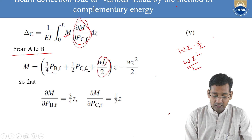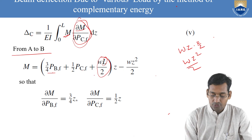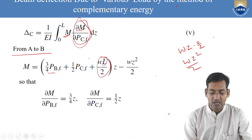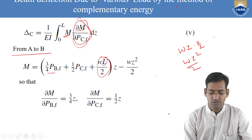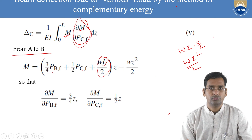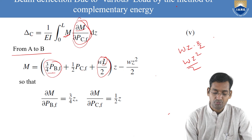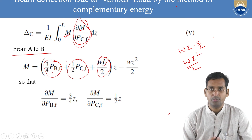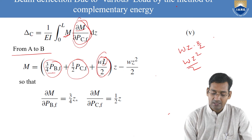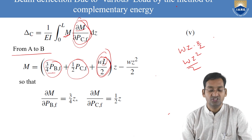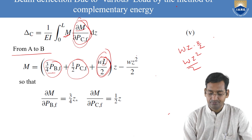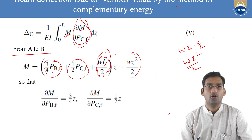For segment A to B, the UDL (W per unit length over full span) contributes −Wz²/2 to the bending moment at z. The complete moment equation from A to B is therefore: M = (3/4 PBF + 1/2 PCF + WL/2)z − Wz²/2. This gives the moment for 0 ≤ z ≤ L/4.